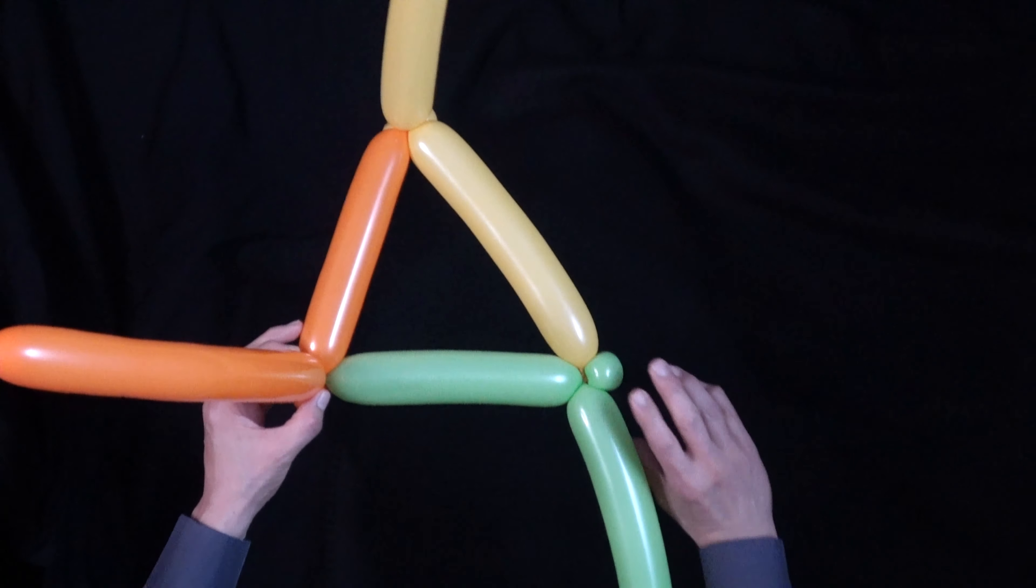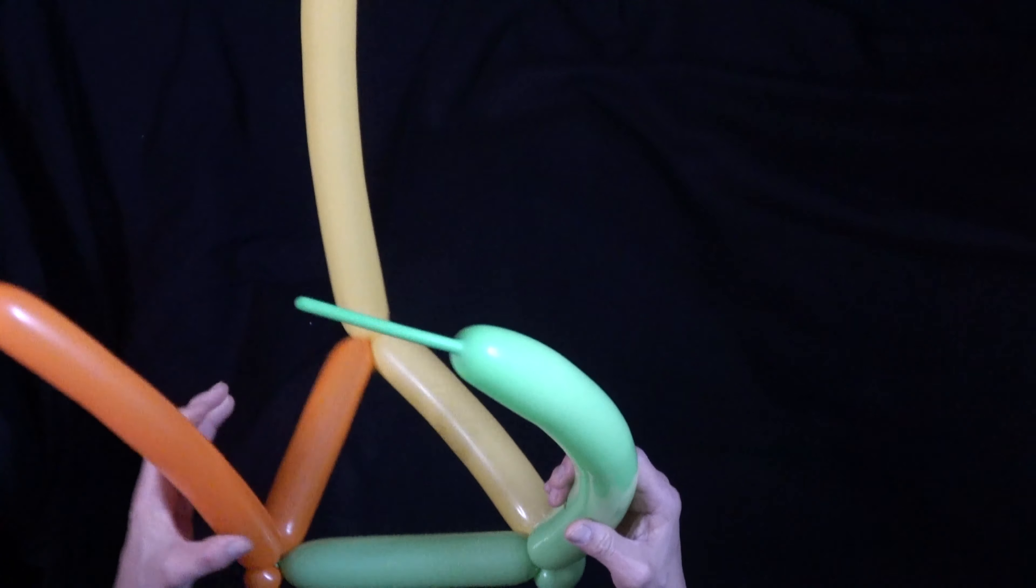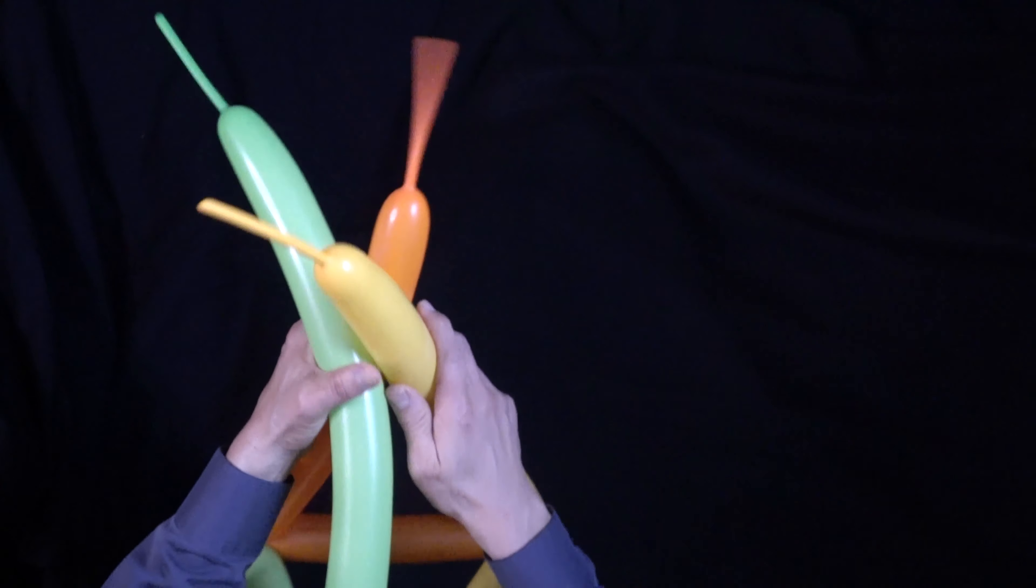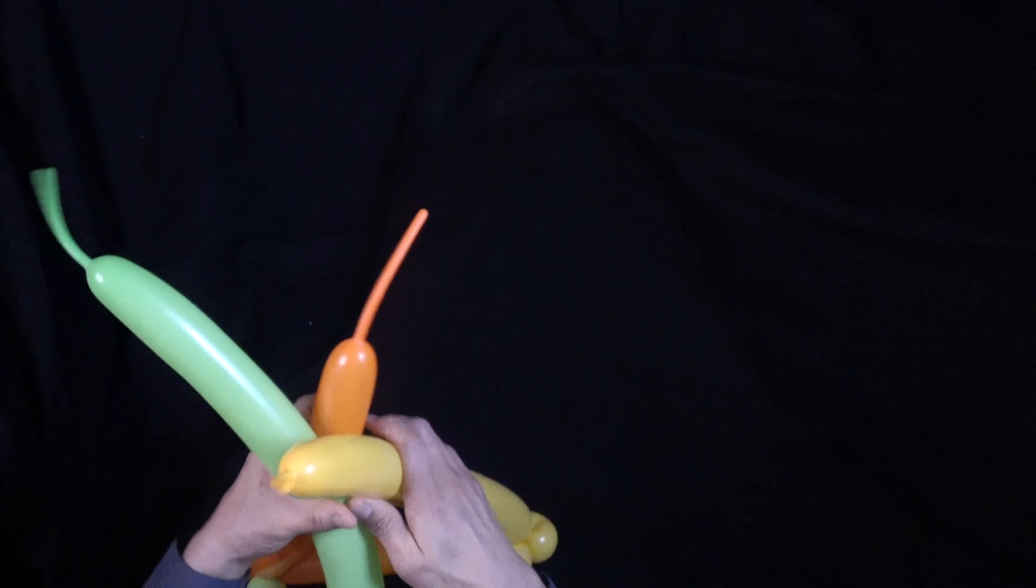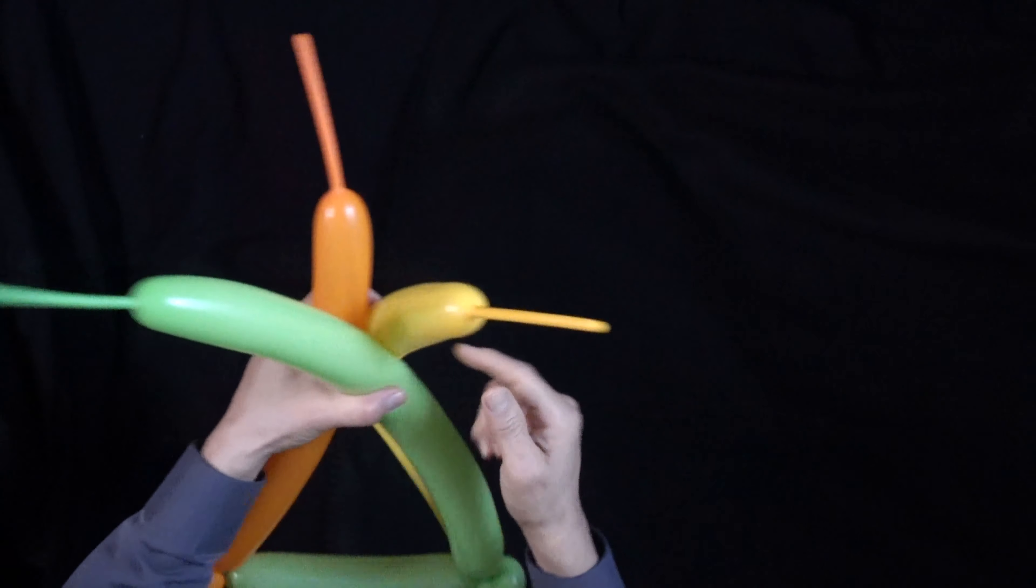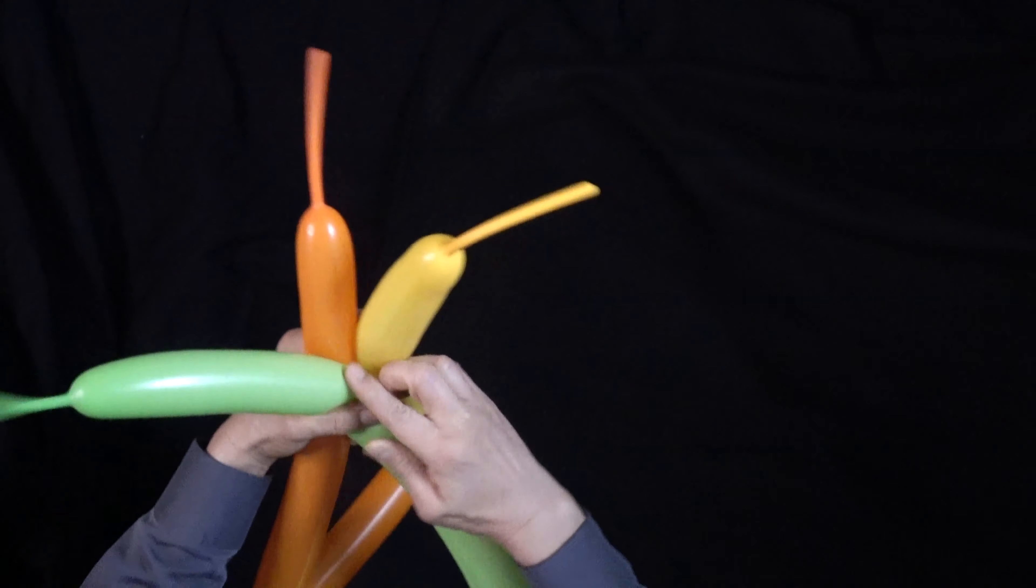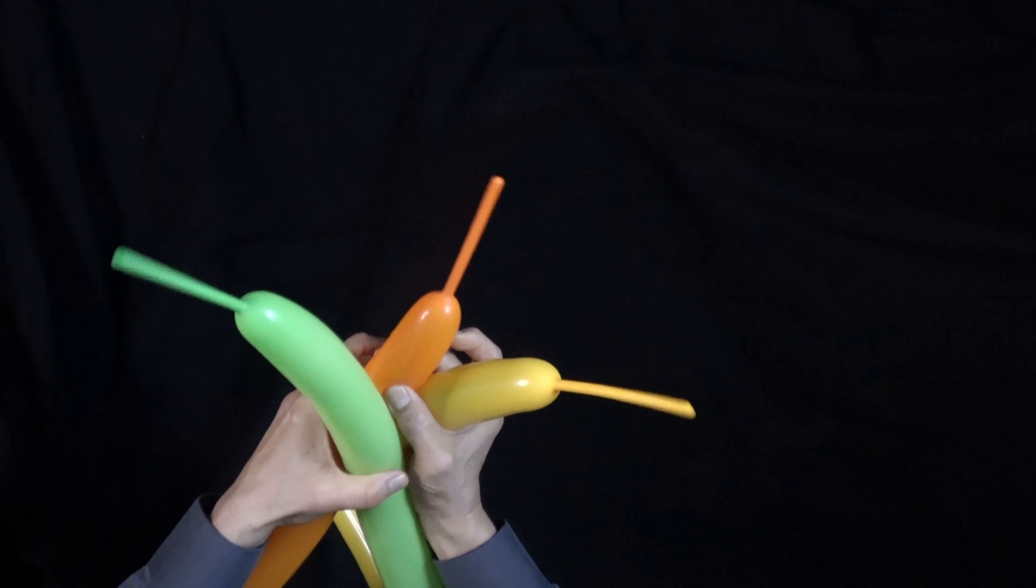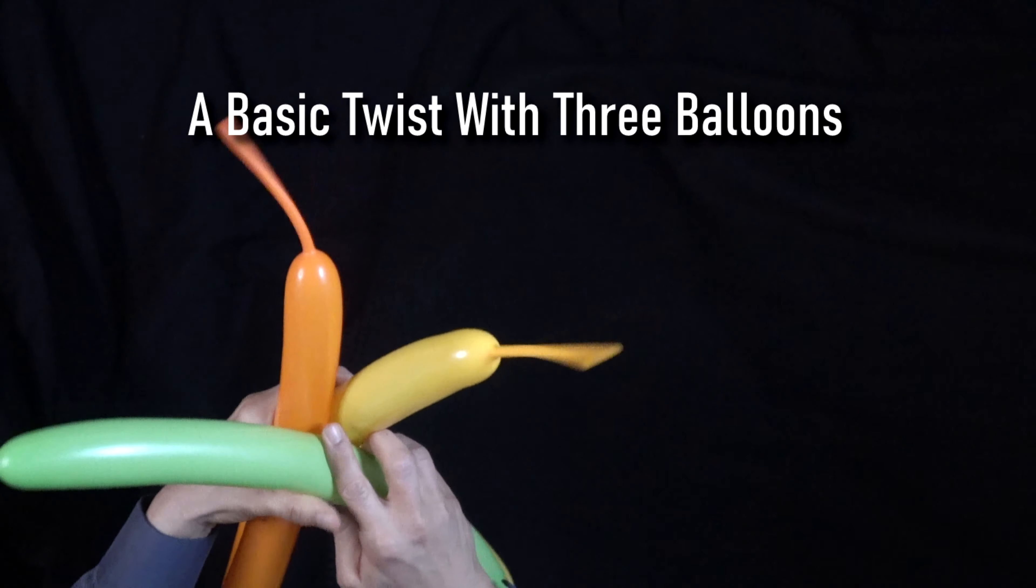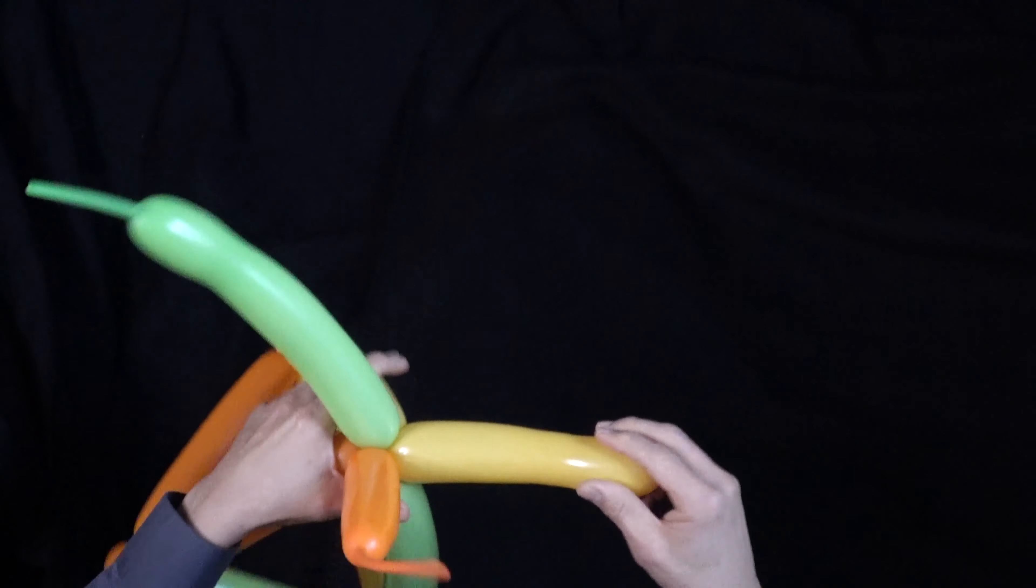Now we're going to take these three balloons and twist them together to form the top of the hat. Gather the balloons together just like this. You'll notice that my green balloon is quite a bit longer than my other ones, but I still have some leeway here. Let's just put these guys together and twist them together. One big twist.